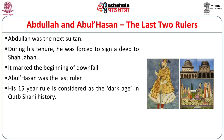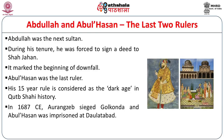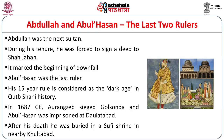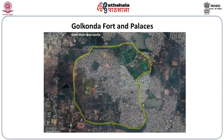Abul Hasan was the last ruler; his 15-year rule is considered the dark age in Qutub Shahi history. In 1687 Aurangzeb seized Golconda and Abul Hasan was imprisoned at Dolatabad. After his death he was buried in a Sufi shrine in nearby Khuldabad — the only Sultan not buried at Golconda; all the rest were buried there.